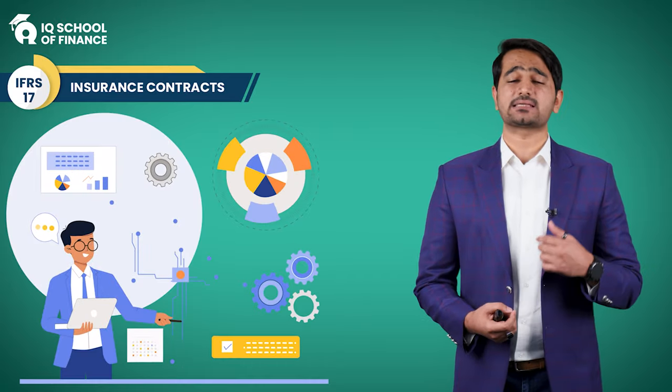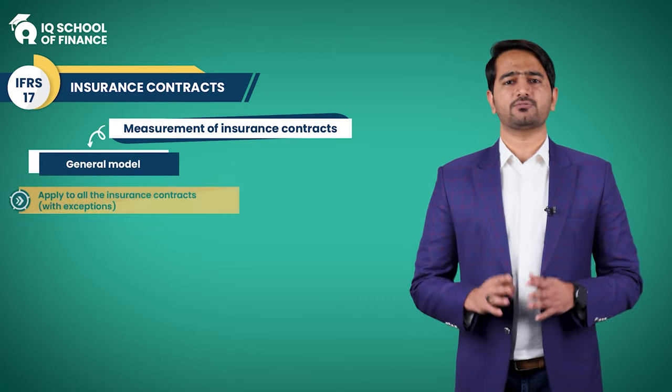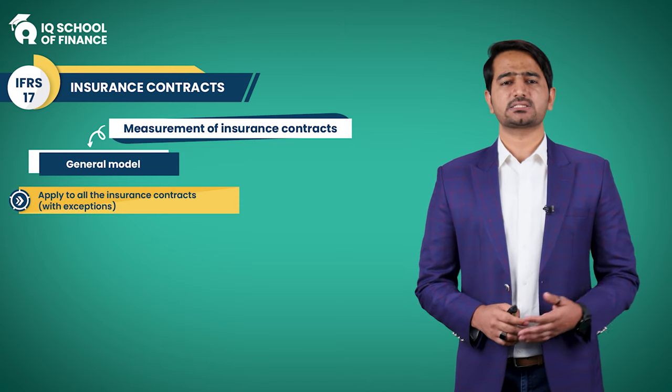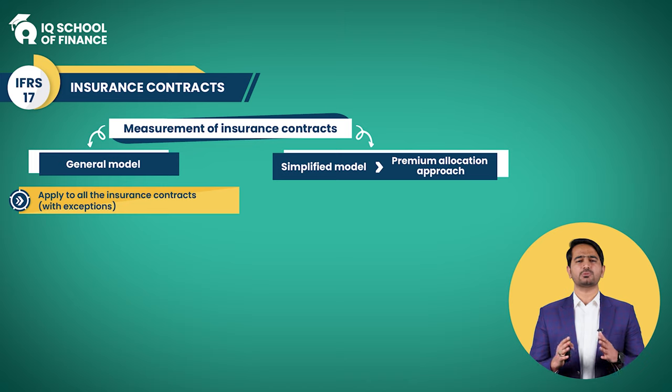In our comprehensive IFRS 17 course, we will delve deep into these concepts using many practical examples and Excel exercises. If you are looking to significantly enhance your understanding of IFRS 17, make sure to check it out. So far we have discussed the general model, which is applicable to all insurance contracts with a few exceptions. Next up, we have a simplified model — the premium allocation approach.